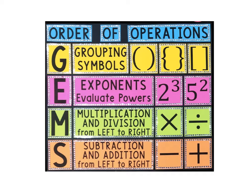This method is called GEMS, and we work through these steps in order to know which operation to do first in the equation. So the first step is always grouping. Does the equation have any parentheses, brackets, or braces? If it does, we do those problems first.